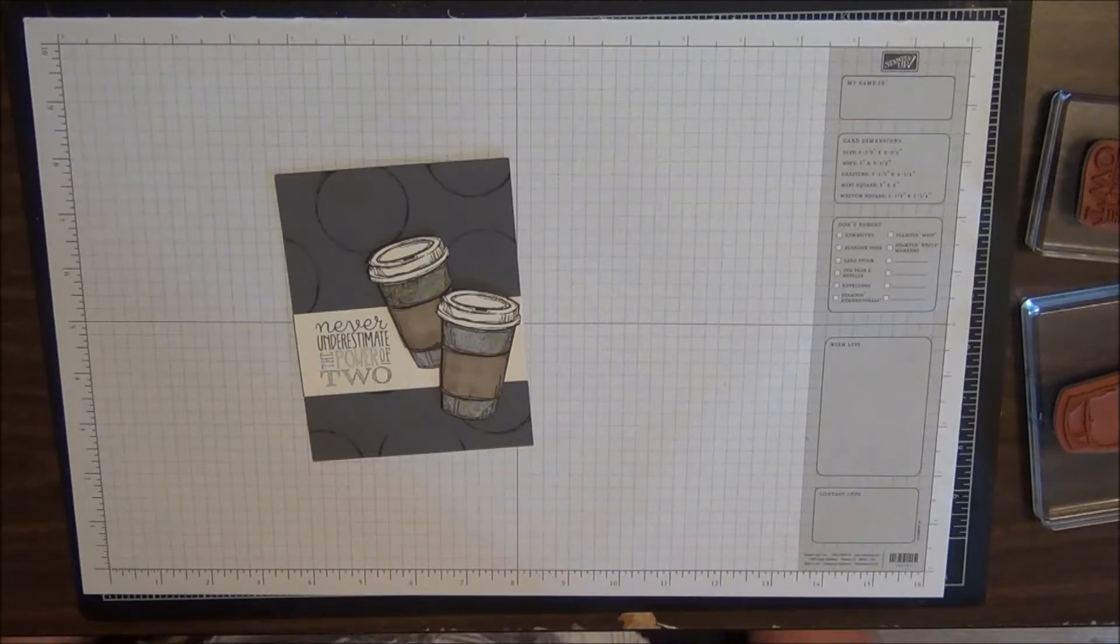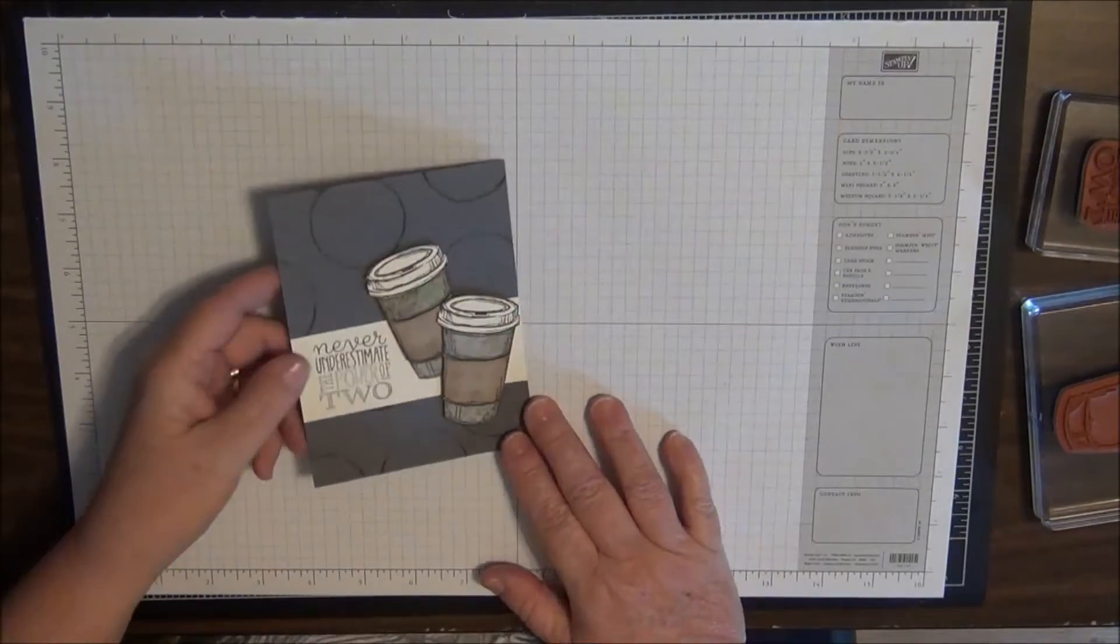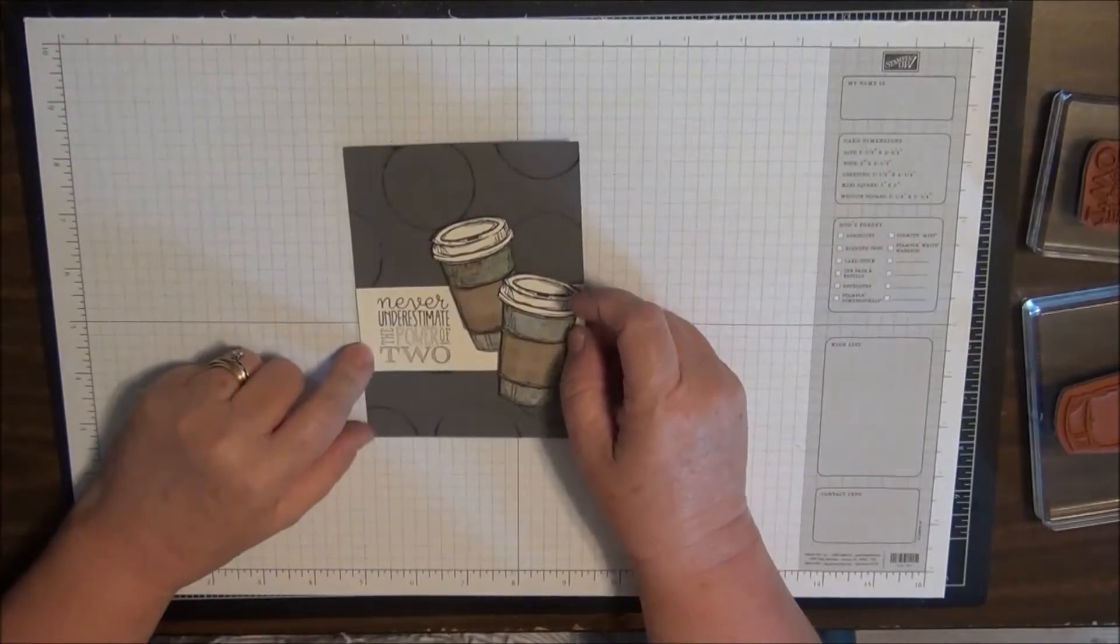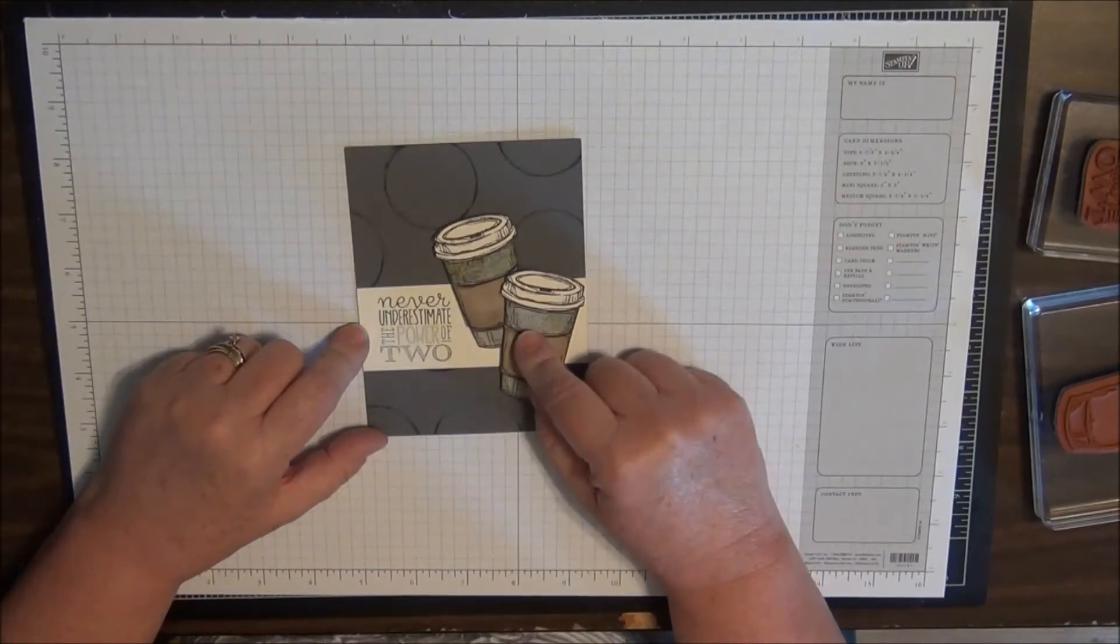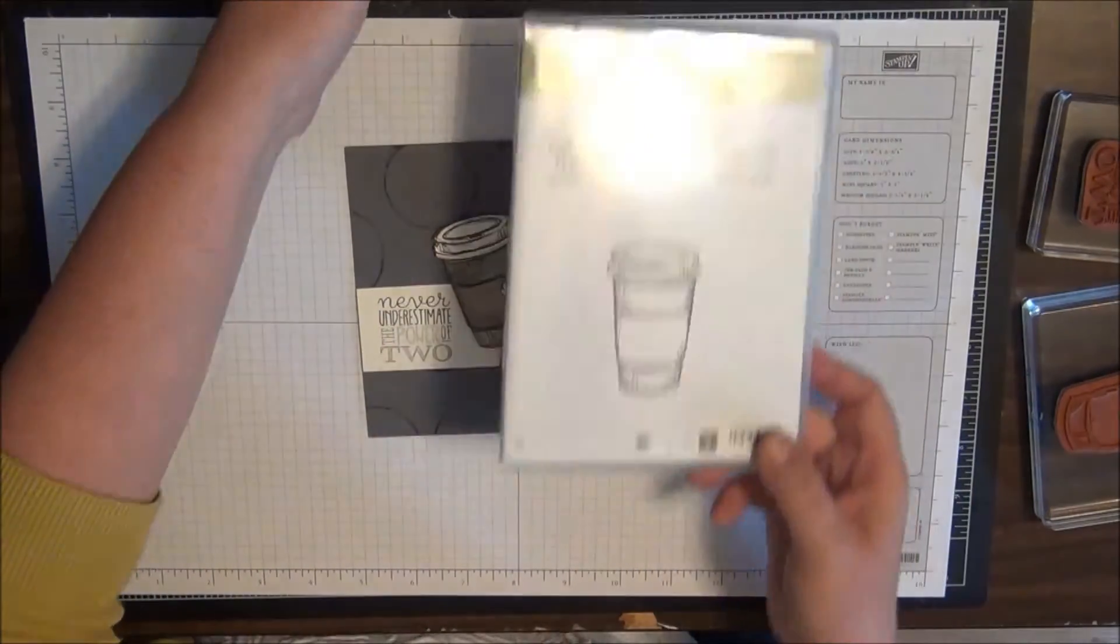Hi and welcome back to Let's Stamp with Phyllis. Today I want to share with you a card that we made in our stamp club in June. Again I was playing with a set called the Perfect Blend.